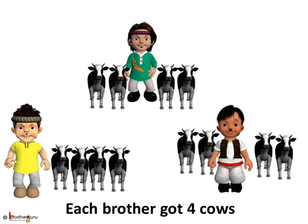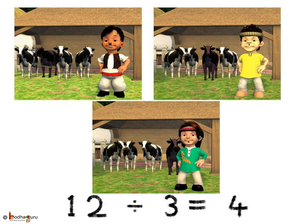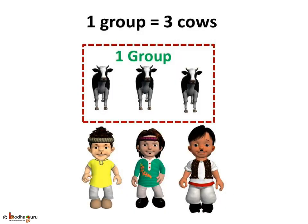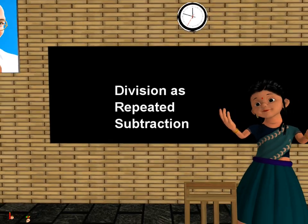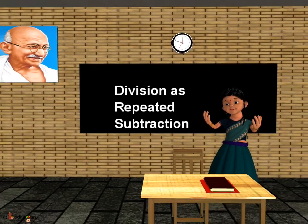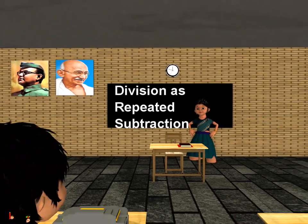No cow was left with the father. This is same as twelve divided by three is four. So this equal sharing or division can also be done as repeated subtraction. Bye-bye, children.